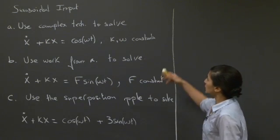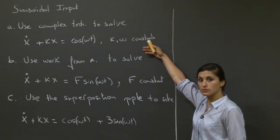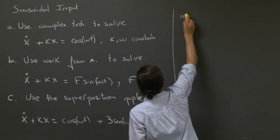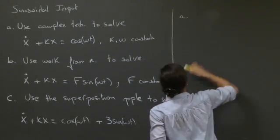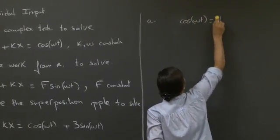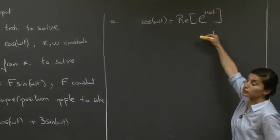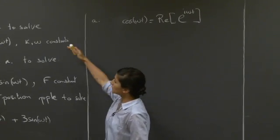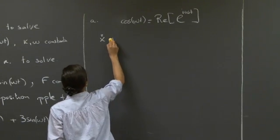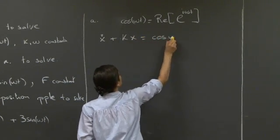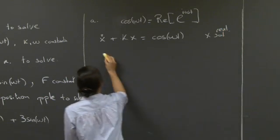Welcome back. What we're asked to do is use a trick learned in class to convert a real-valued ODE into complex form. The first thing to realize is that cosine of omega t is simply the real part of the complex exponential e to the i omega t. Recognizing that, and seeing that the ODE is real-valued and linear, we can convert this real-valued ODE into a complex-valued ODE.